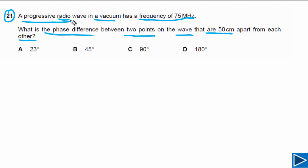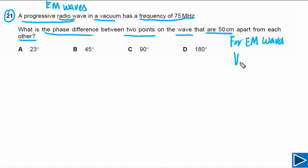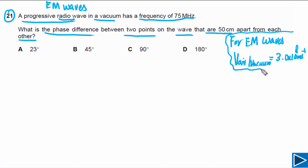It is given that this is a progressive radio wave, so simply we can say this is an electromagnetic wave. All electromagnetic waves travel at the same speed in vacuum or in air. For all electromagnetic waves, their speed in air or vacuum is equal to the speed of light — 3.0 × 10⁸ meters per second. This is a very important point you need to remember for calculations.